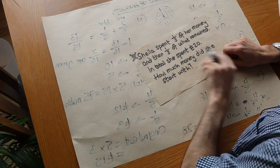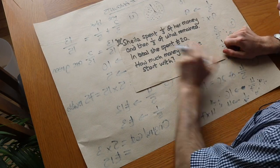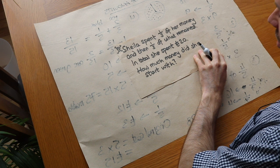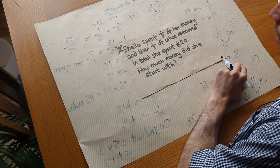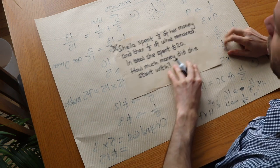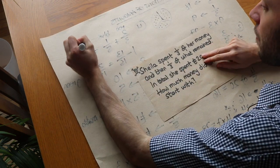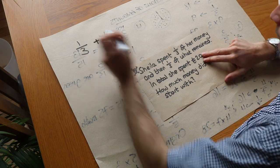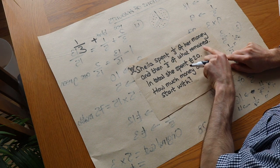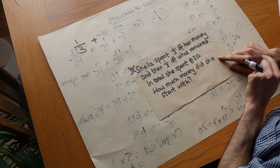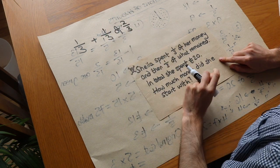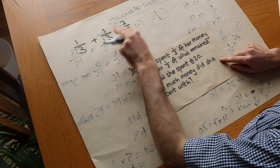Now a last killer question — this is much harder than you would actually get in a GCSE paper. Sheila spent a third of her money and then a third of what remained. In total she spent £20. How much money did she start with? Let's think about what fraction of her money she spent. She initially spent a third, and then she spent a third of what remained. She spent a third, so two-thirds remained, and she's spending a third of that two-thirds.